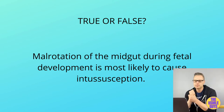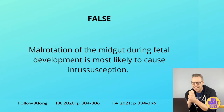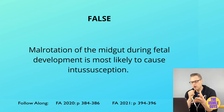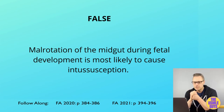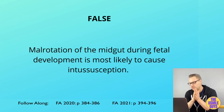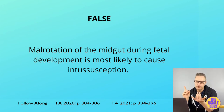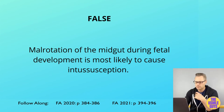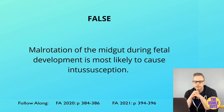Malrotation is associated with both obstruction of the duodenum and volvulus — not just obstruction alone. In this condition, the small bowel is malpositioned on the right side of the abdomen and is characterized by the formation of fibrous Ladd bands.